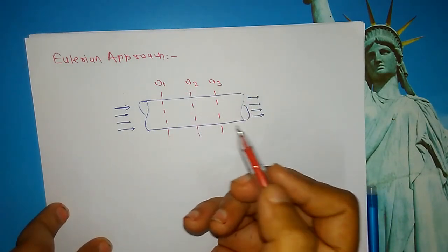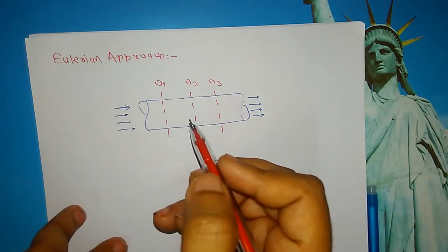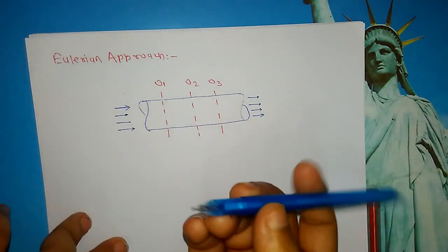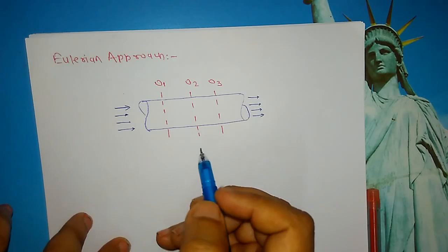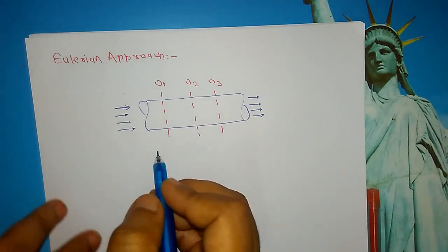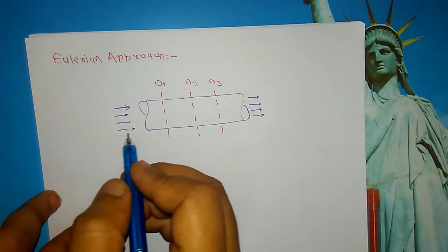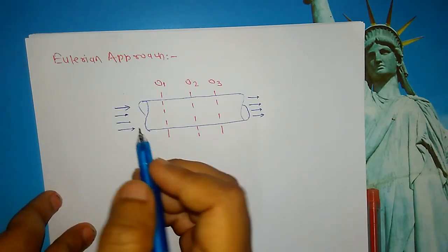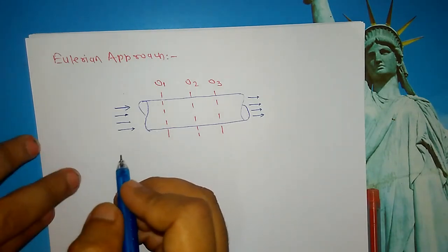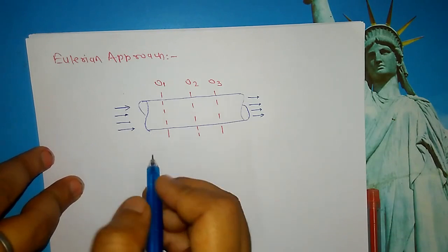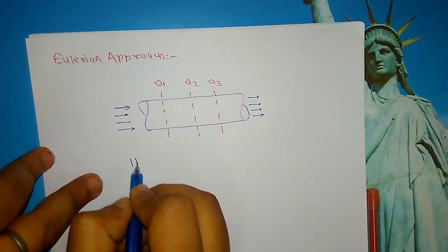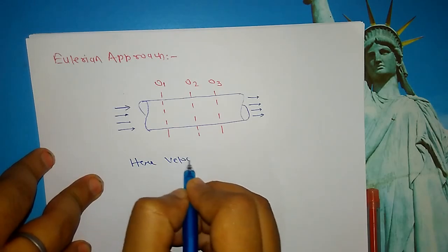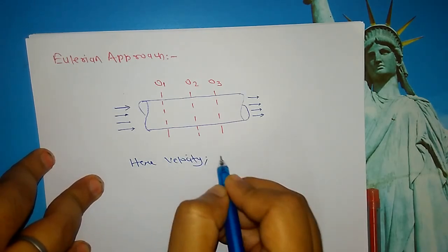At point o2, observer o2 will note down the entire velocity and acceleration at that point, and similarly for o3. In this way, we come to know what the acceleration and velocity of the fluid particles are, and we study the flow behavior of the fluid particles.